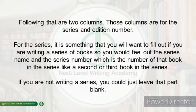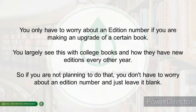Following that are two columns for the series and edition number. For the series, fill it out if you are writing a series of books — you would enter the series name and the number of that book in the series. If you are not writing a series, leave this blank. You only need an edition number if you are making an upgrade of a book, as commonly seen with college textbooks. If that doesn't apply, leave it blank as well.